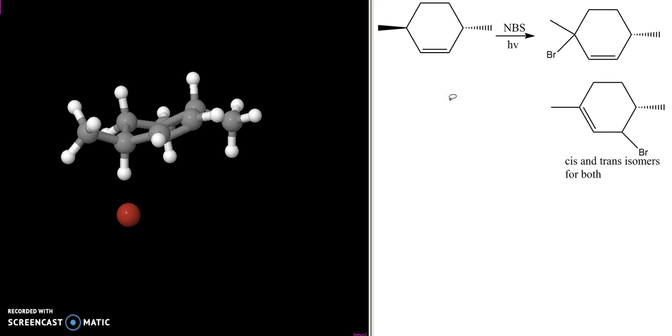We know that in allylic bromination, we have to worry about things like resonance, and in this case, because of the resonance, we get two different regioisomers, and we get the cis and trans substitution for both of those.